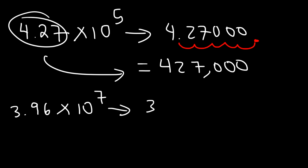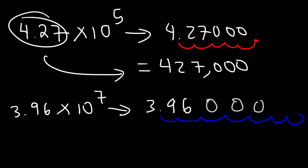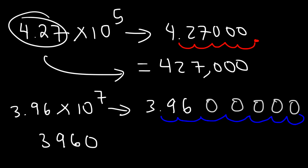Now for 3.96 times 10 to the 7 — we move the decimal point 7 units to the right and add five zeros. The answer is 39,600,000.